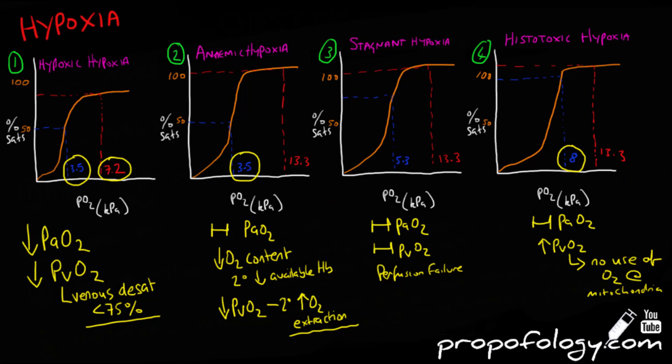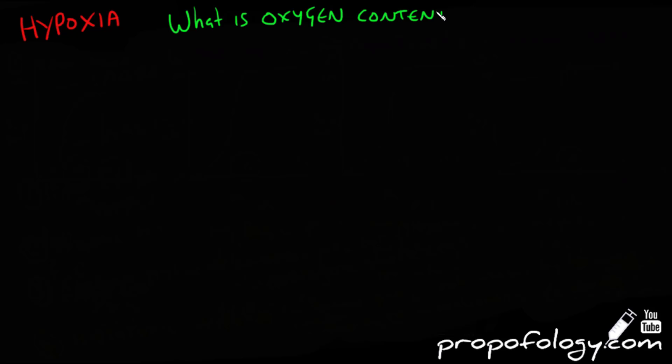Lastly, we're going to look at how to calculate the oxygen content of blood. So oxygen is carried in the blood in two main ways. It's either combined with haemoglobin or it's dissolved in plasma. Oxygen content is calculated by combining the proportion of oxygen-bound haemoglobin with that that's dissolved in plasma.